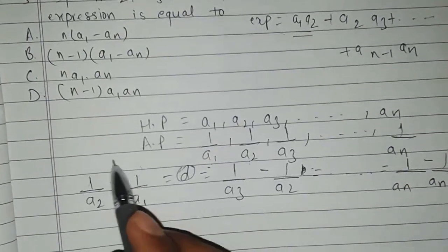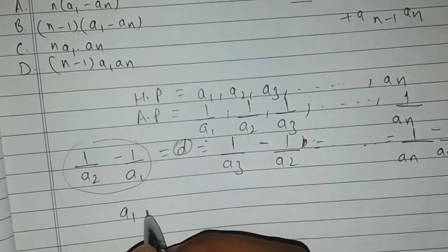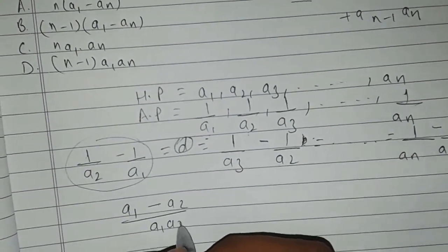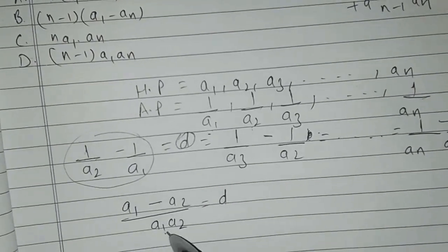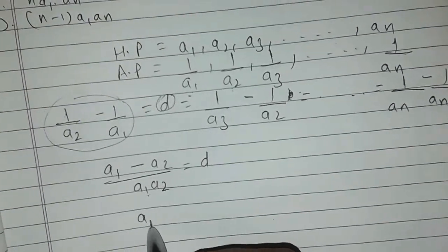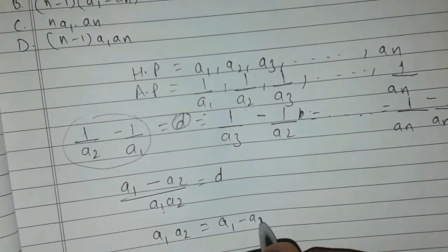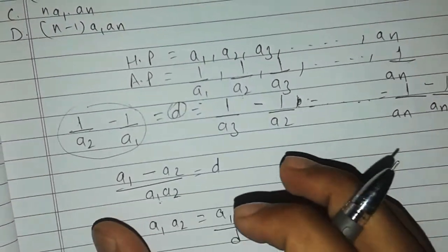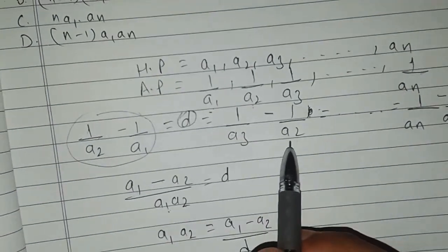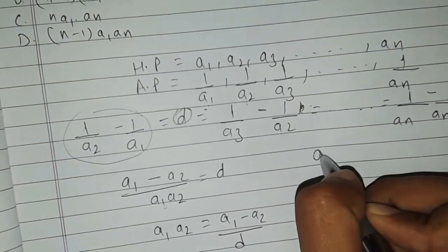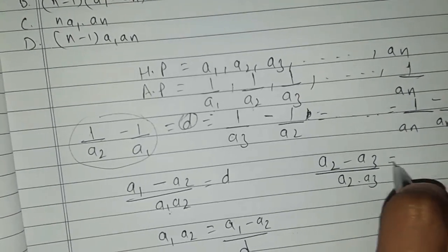What we require is a1·a2. By taking LCM we have (a1 minus a2) upon a1·a2 equals d. So a1·a2 will be equal to (a1 minus a2) divided by d. Now looking at the relation between 1/a3 minus 1/a2 with d: we get (a2 minus a3) upon a2·a3 equals d, so a2·a3 equals (a2 minus a3) divided by d.